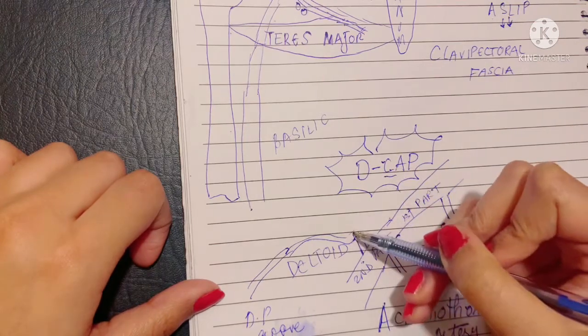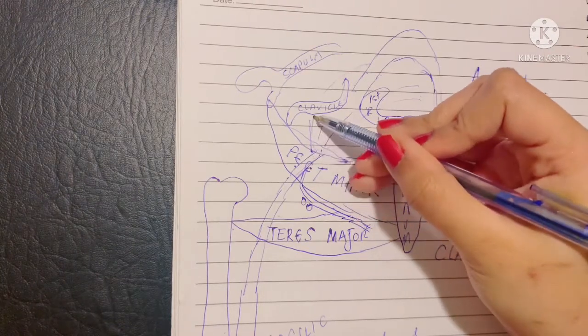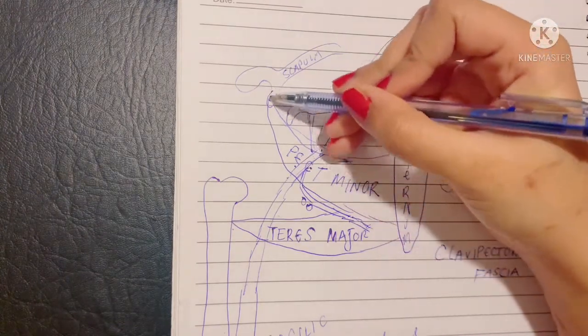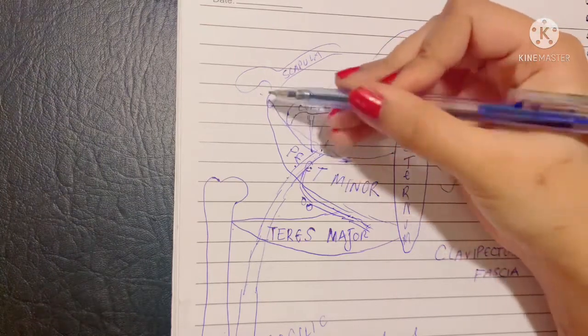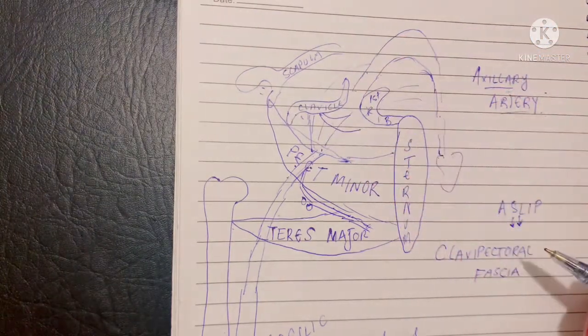Then we have the C. C is the clavicular branch. The C branch goes above supramedially and it supplies the clavicle. It supplies the acromioclavicular joint and the subclavius muscle as you remember which was lying just beneath the clavicle.